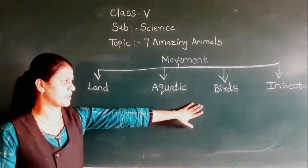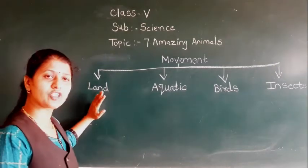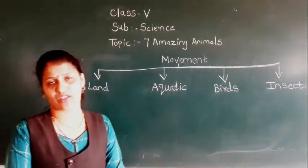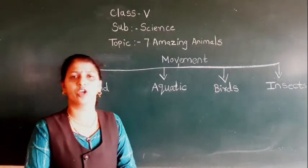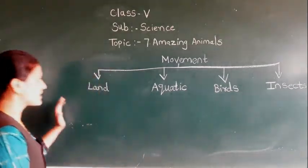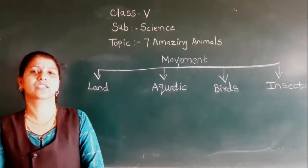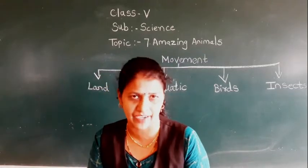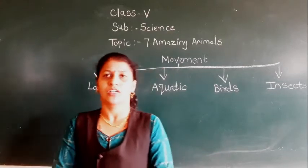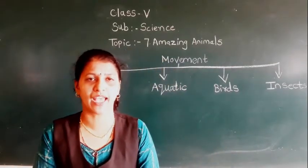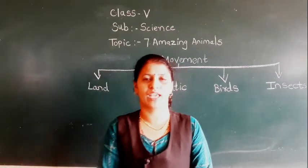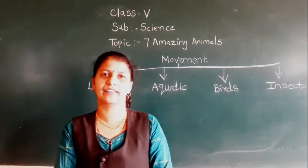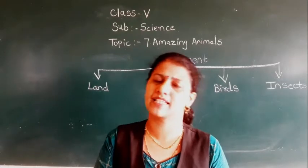For each and every animal the movement is different. First we will learn about land animals, also called terrestrial animals. If you observe animals living on the land, for example tiger, lion, cat, dog — they have four legs. The front legs are called forelimbs and the back legs are called hind legs.